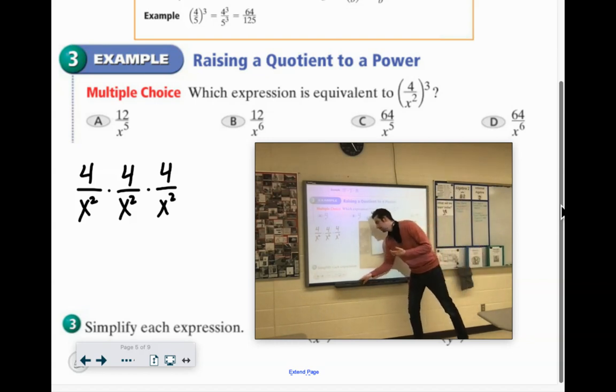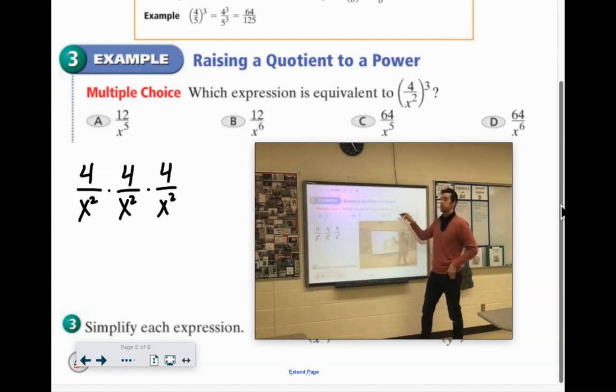But the property today is you are going to multiply all the exponents by 3. Now, the exponent on the 4 is 1, so if you did 1 times 3, it would be 3. And then for the x, you have 2, so 2 times 3 would be x to the sixth.